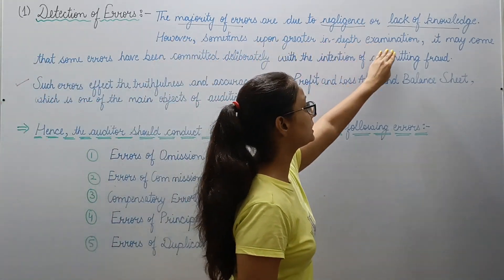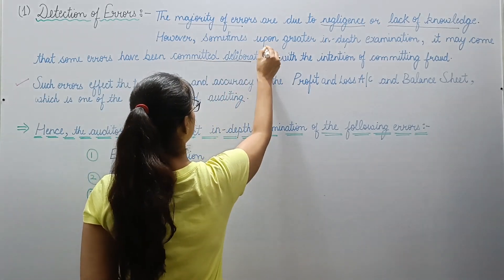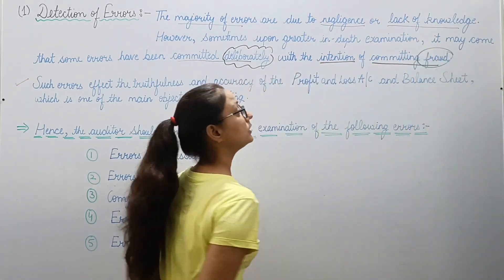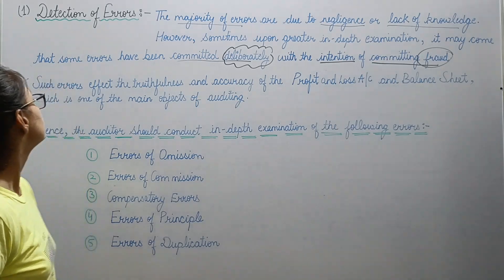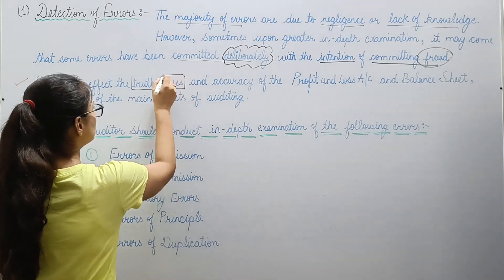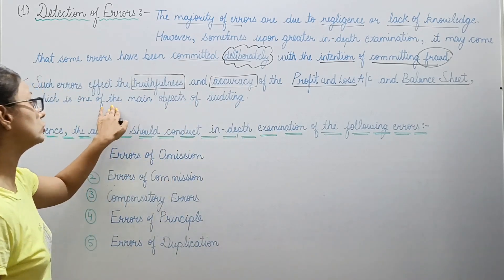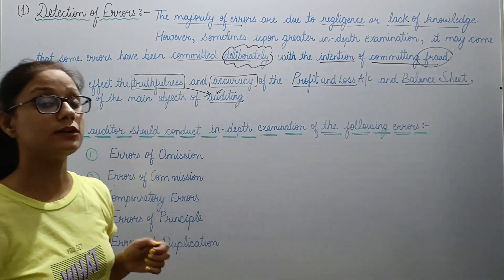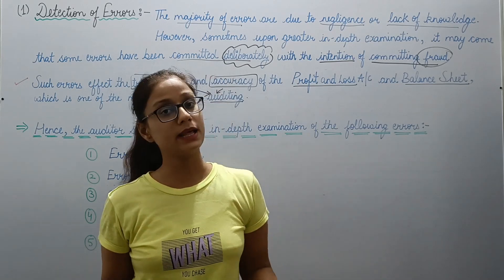Sometimes upon greater in-depth examination, it may come to light that some errors have been committed deliberately, with the intention of committing fraud. Because the main aim is to commit fraud, and intentionally some mistakes are made. Some errors affect the truthfulness — if there are errors in your accounts, it will ultimately affect the truthfulness and accuracy of the P&L account and balance sheet.